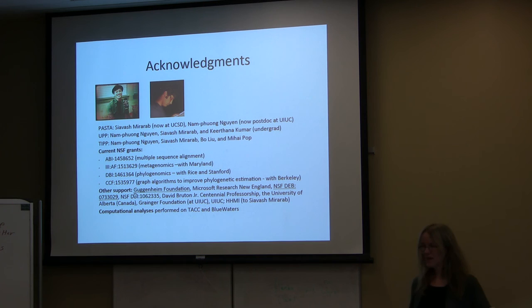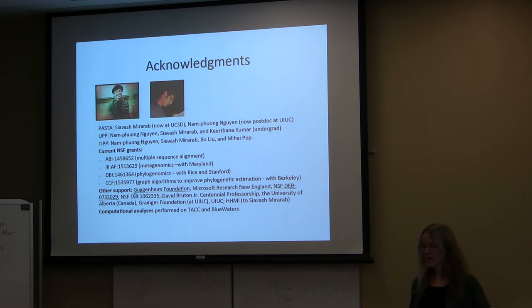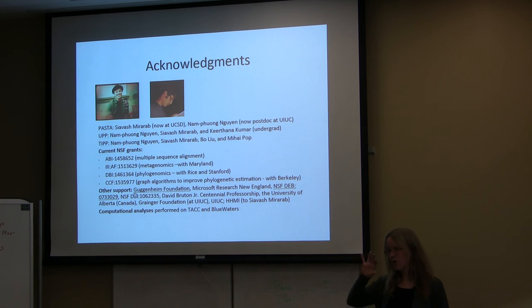The trees were known to be wrong before UP was developed because the P54 gene gave really bad trees. When the alignment was redone using UP, the trees made more sense, suggesting the alignment was the problem—not the maximum likelihood analysis on the missing data matrix.